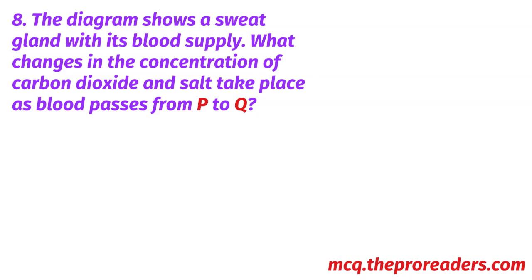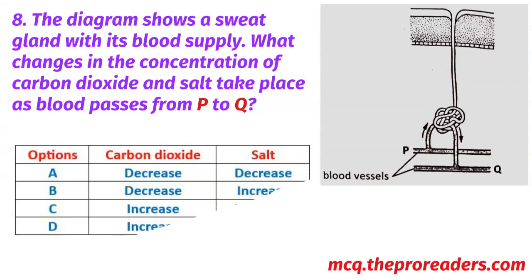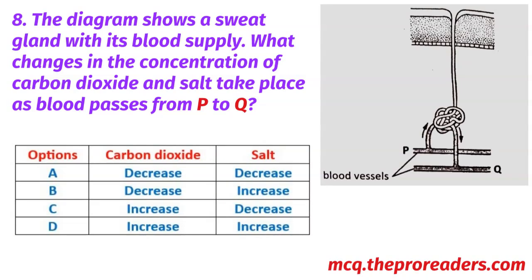The diagram shows a sweat gland with its blood supply. What changes in the concentration of carbon dioxide and salt take place as blood passes from P to Q? Options — carbon dioxide, salt. A. Decreased, decrease. B. Decreased, increase. C. Increased, decrease. D. Increased, increase. Option C — increased, decrease — is the correct answer.